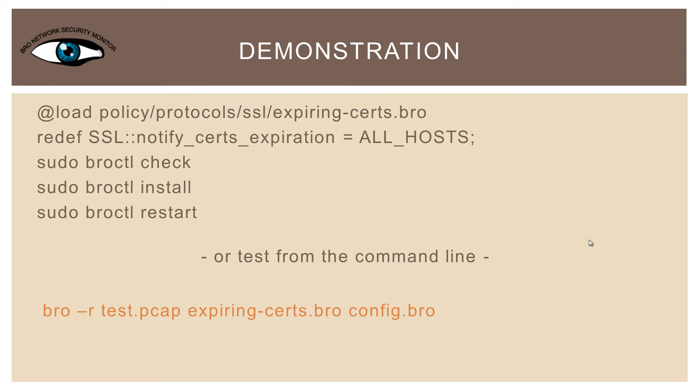I'm trying to make this as informative and helpful as possible, so today I'll show you another way: how to run Bro from the command line. Running Bro from the command line is helpful and it's how most Bro developers iteratively test their code. You can see all the options with -h. In this case, we're telling Bro to use its current configuration, then -r to read in a specific PCAP, and then load the following two Bro scripts in order. The first script is a copy of the expiring-cert.bro script included in the default build of Bro 2.1. The second script contains one line: the redefinition of the SSL::notify_certs_expiration variable specified above.